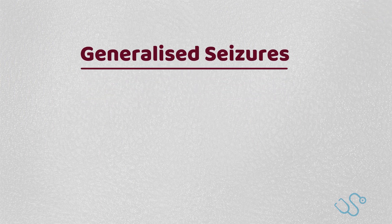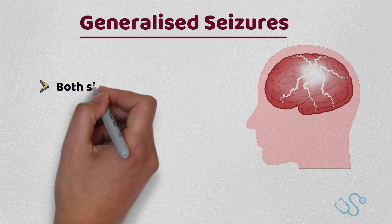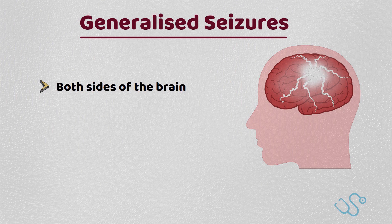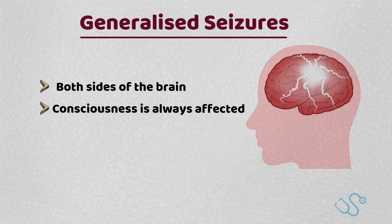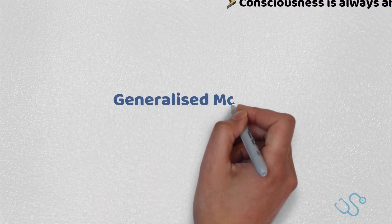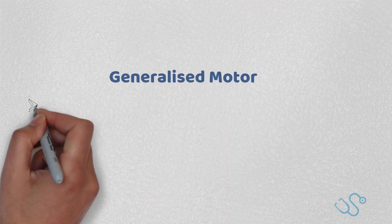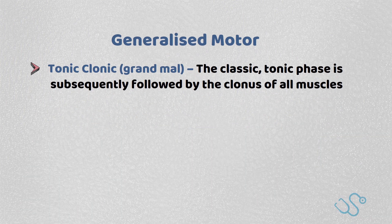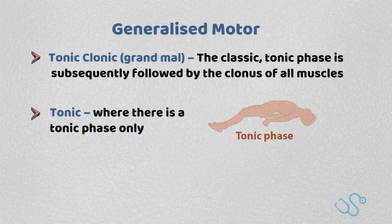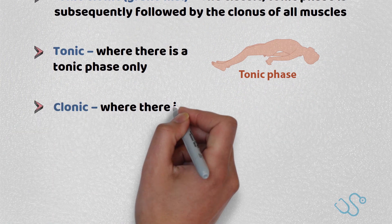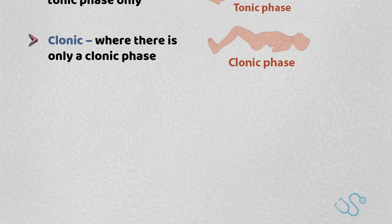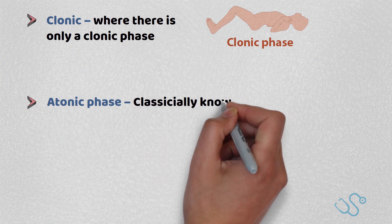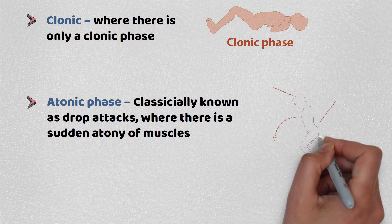Generalized seizures are a more well-known subtype of epilepsy, with the foci of the seizure involving both sides of the brain. In these seizures, consciousness is always affected, unlike in focal seizures. There can be further classification depending on whether it's motor or non-motor. For generalized motor seizures, the first type is tonic-clonic or grand mal seizures — the classic tonic phase followed by clonus of all the muscles. There are also tonic seizures with only a tonic phase, clonic seizures with only a clonic phase, and atonic seizures, classically known as drop attacks, where there is sudden muscular atony.